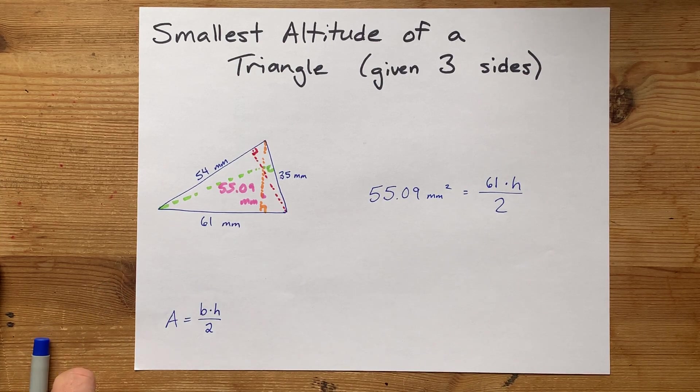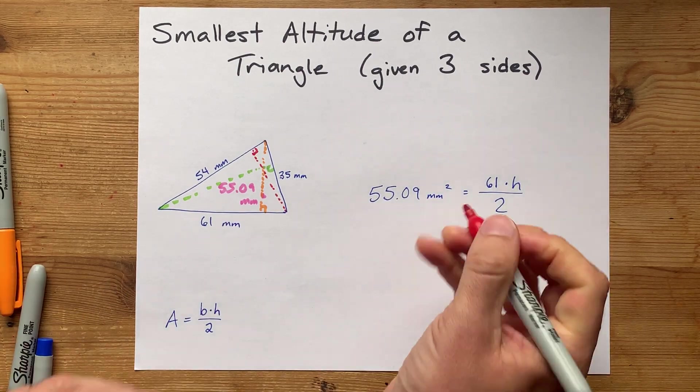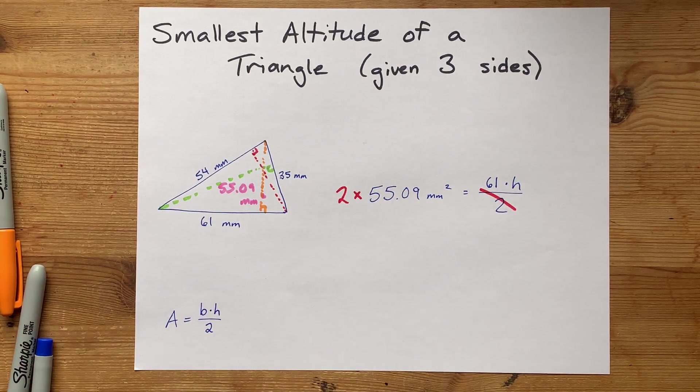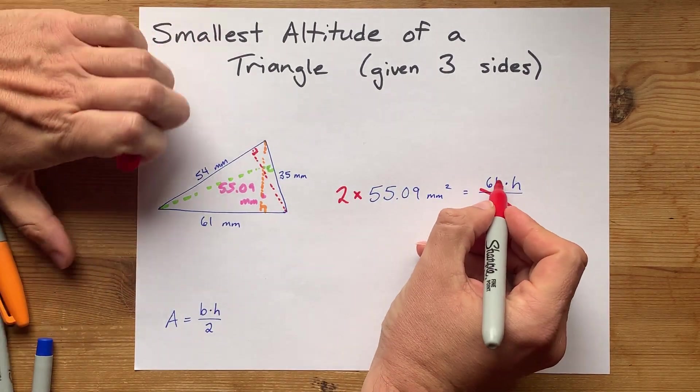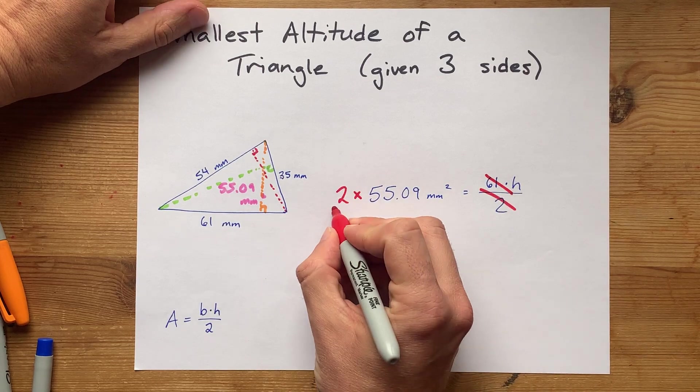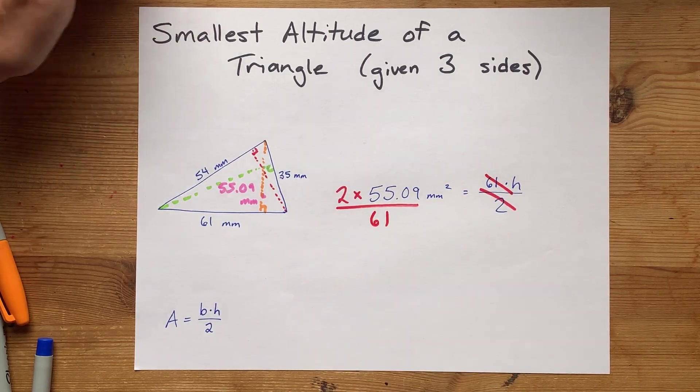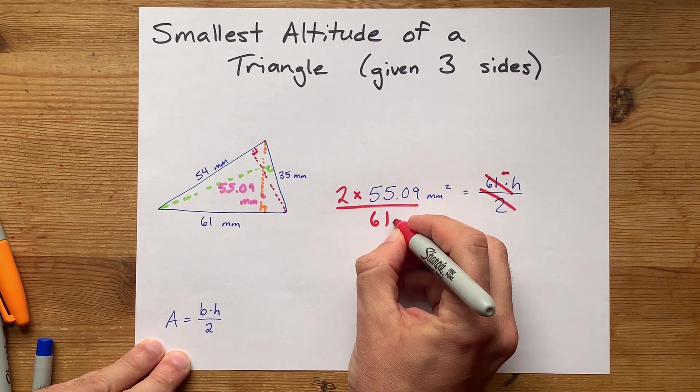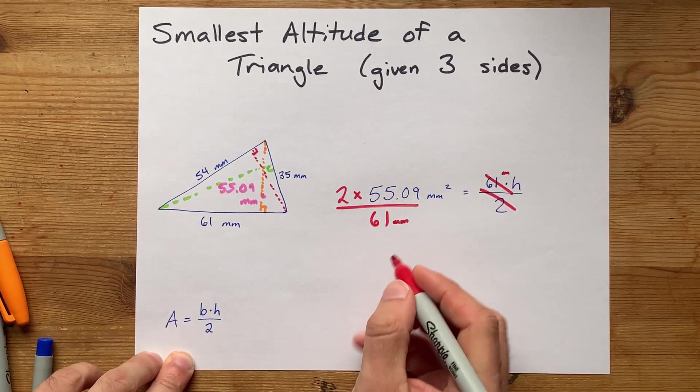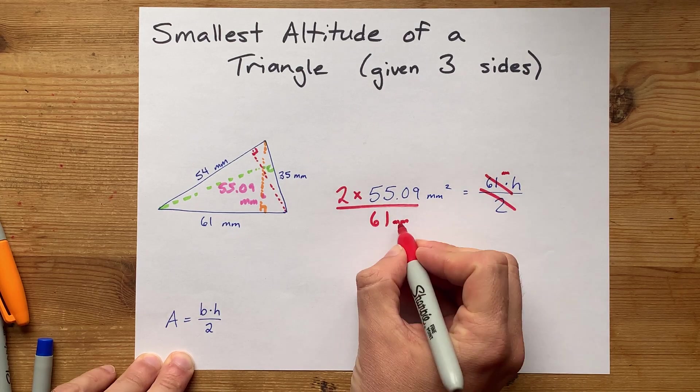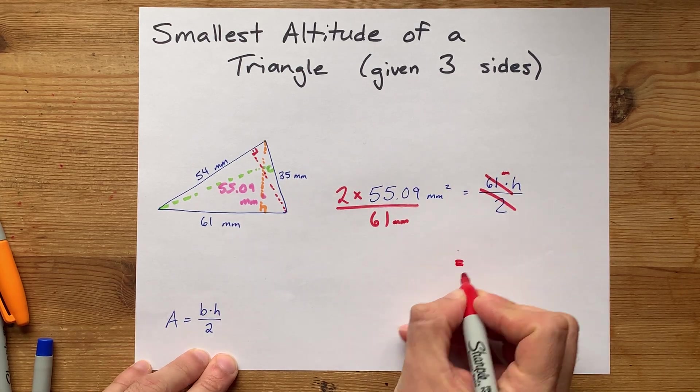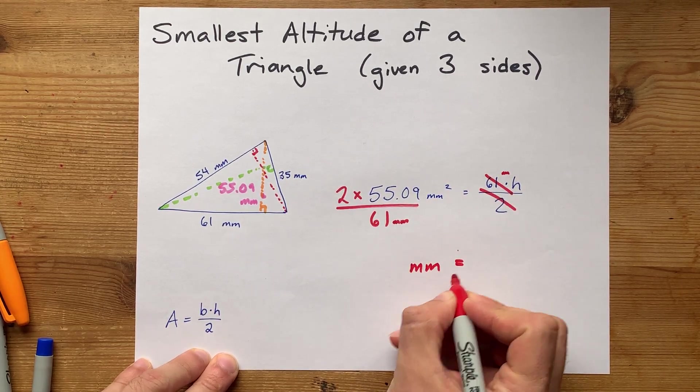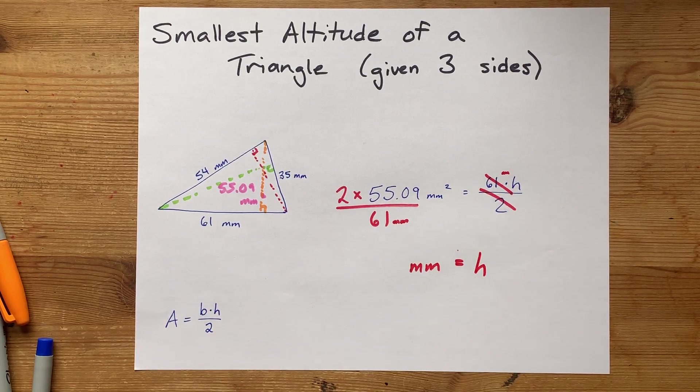How do you undo dividing by 2? Well, the answer is you times the other side by 2. And how do you undo multiplying by 61? The answer is you divide both sides by 61. Now, that 61 actually had units of millimeters, which is what helps the units here cancel. Millimeters squared divided by millimeters will give us units of millimeters for the height that we're solving for.